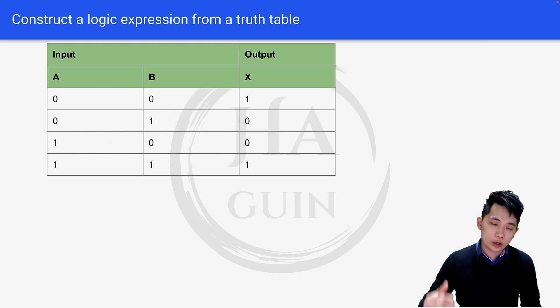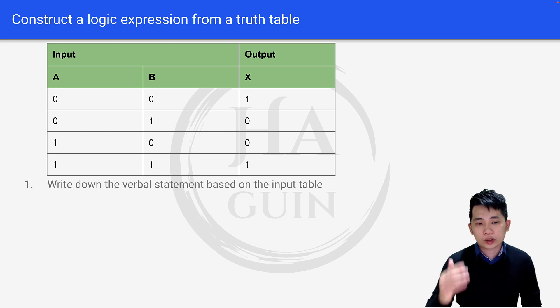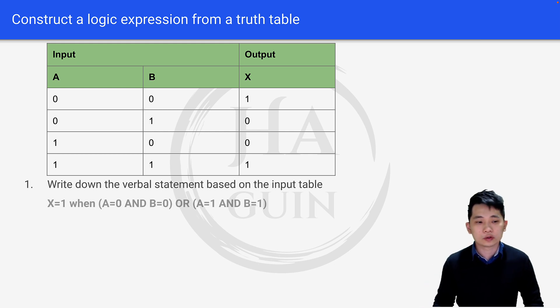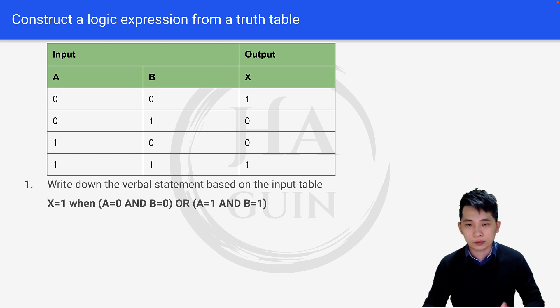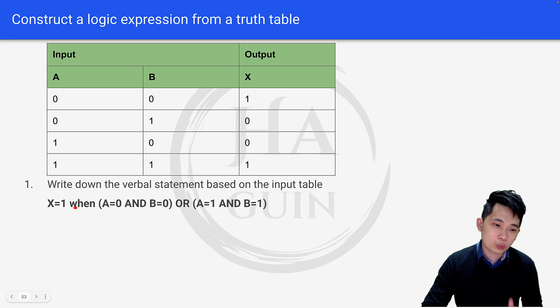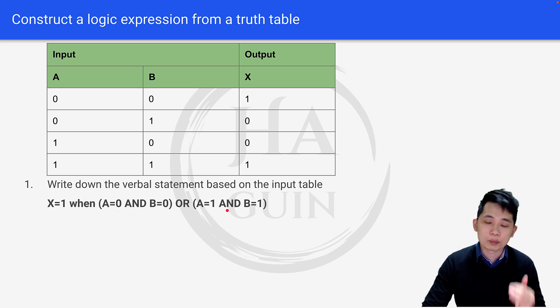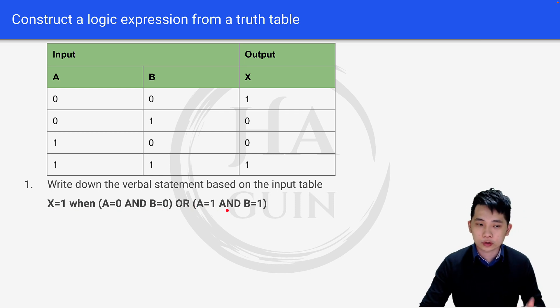The first thing we are going to do is write down the verbal statement based on the input table. So this will be the verbal statement: x equals 1 when a equals 0 and b equals 0, or when a equals 1 and b equals 1.